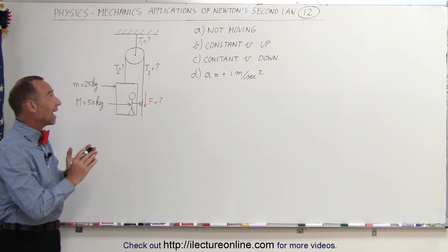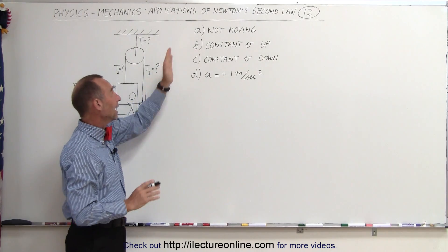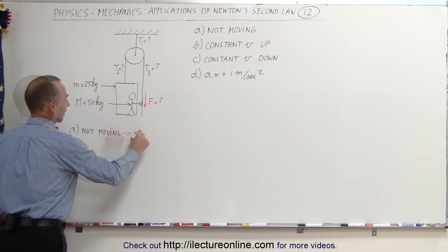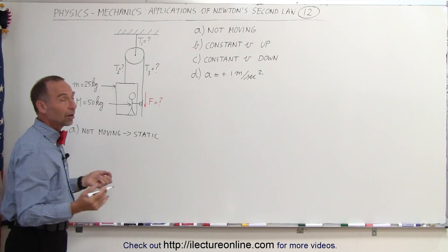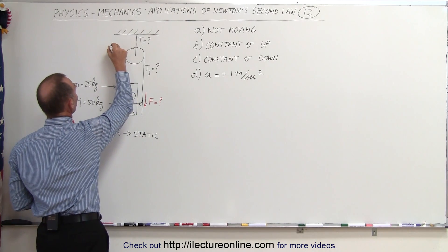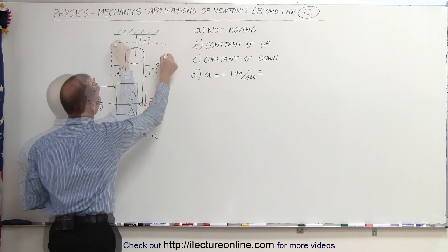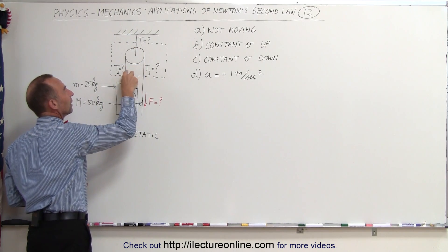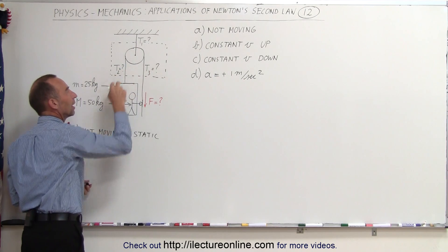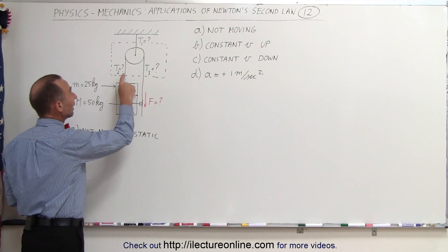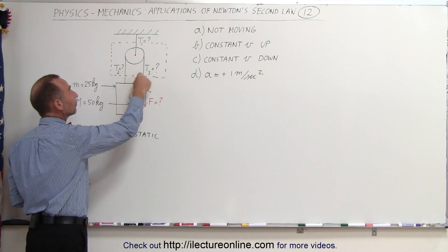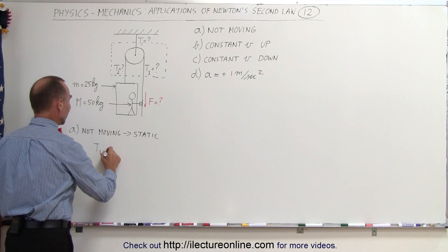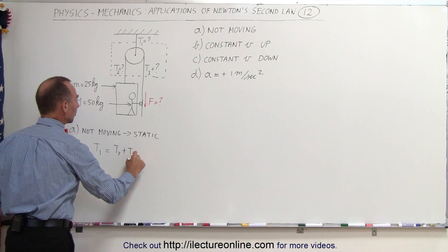For Part A, everything is static — nothing is moving. We draw a free body diagram about the pulley and realize that the upward force in cable 1 must equal the sum of the two downward forces from cables 2 and 3. Since the tension on both sides of a frictionless pulley is equal, T1 equals T2 plus T3.